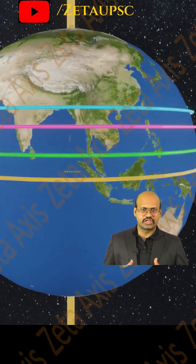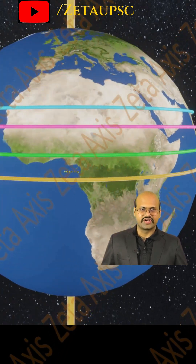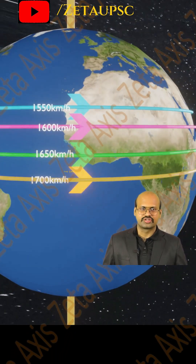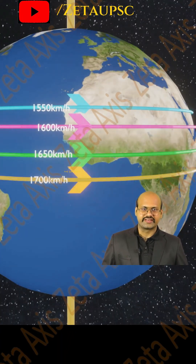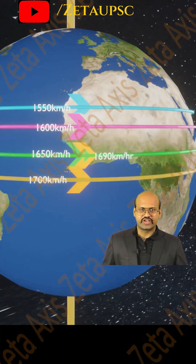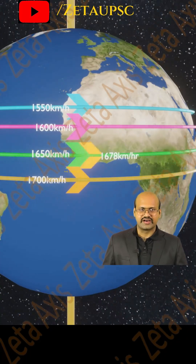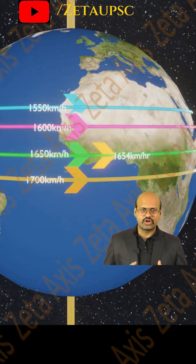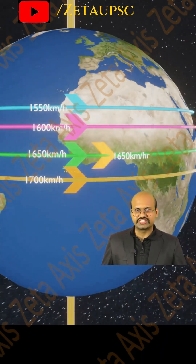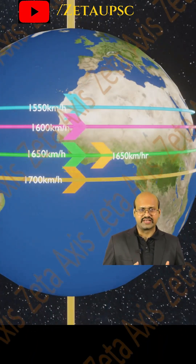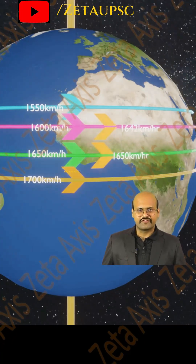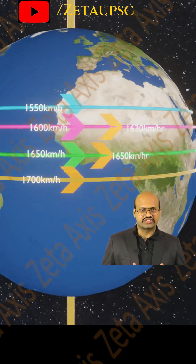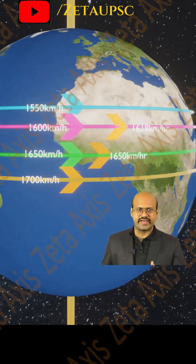Now suppose the yellow airstream at the equator moves north to the green line. The speed of the yellow airstream is higher, and inertia will not allow it to change its velocity suddenly. Therefore, the yellow stream will move ahead.